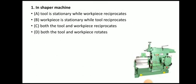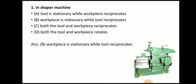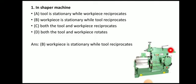The very first question: in a shaper machine, the workpiece is stationary while the tool reciprocates. Here you can see the image of a shaper machine — the tool reciprocates whereas the workpiece is stationary. The workpiece is mounted on the table and the single point cutting tool reciprocates with the help of the ram.